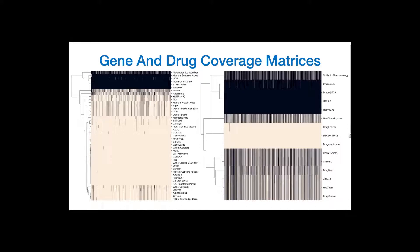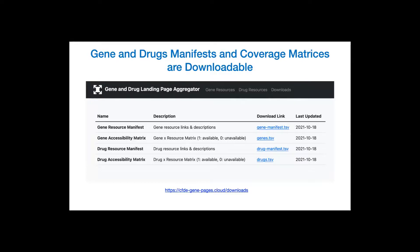To display the availability of genes and drugs across resources, we generated accessibility matrices. Genes and drugs are listed in columns of these matrices and resources in rows. Bright color represents the presence of a gene or drug in a resource, while dark colors indicate absence. The downloads tab provides access to the manifest of gene and drug resources as well as matrices that describe gene and drug availability across all resources. These matrices were generated by querying many gene and drug terms in each resource and will be updated periodically.